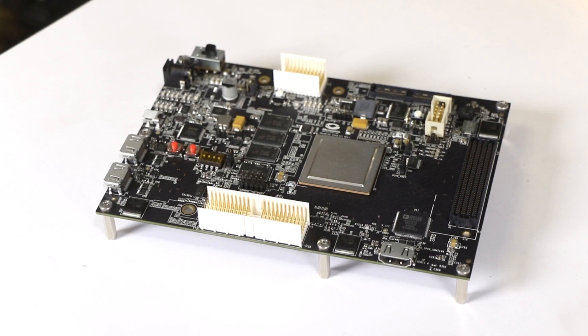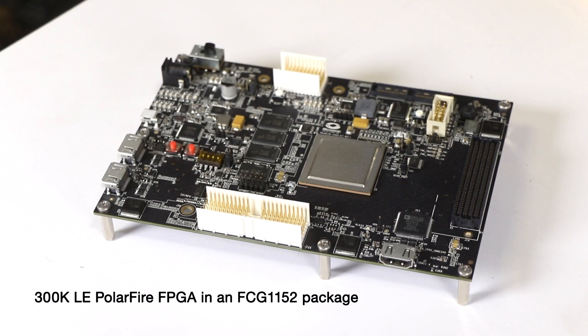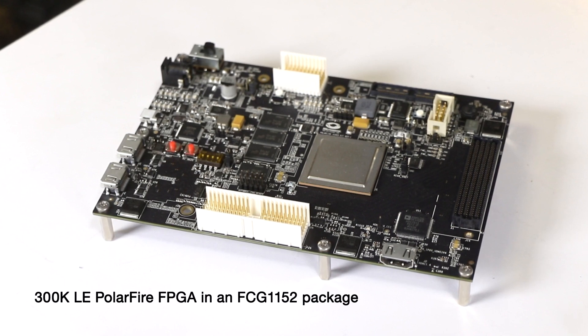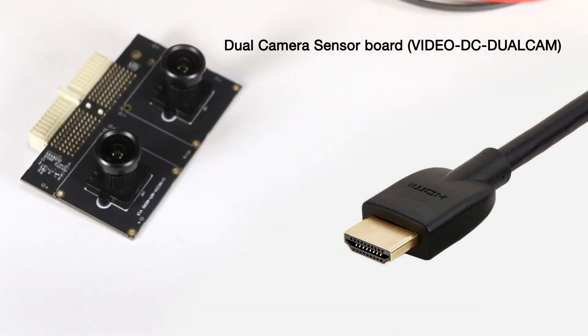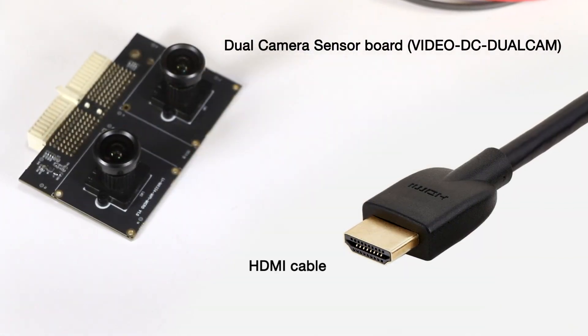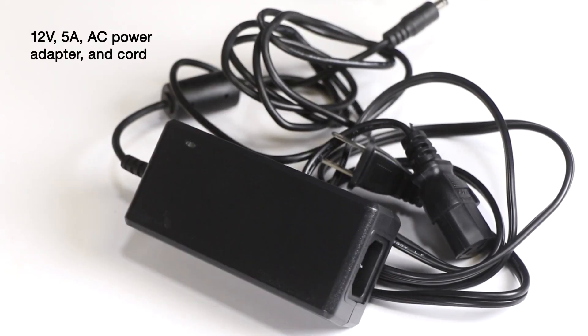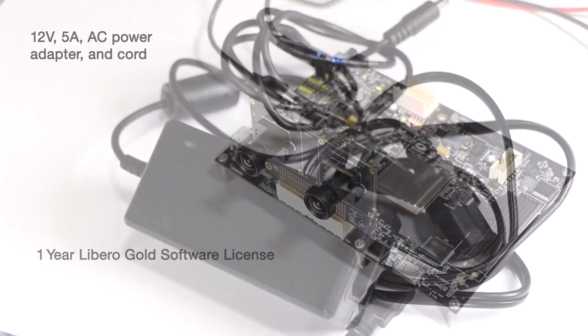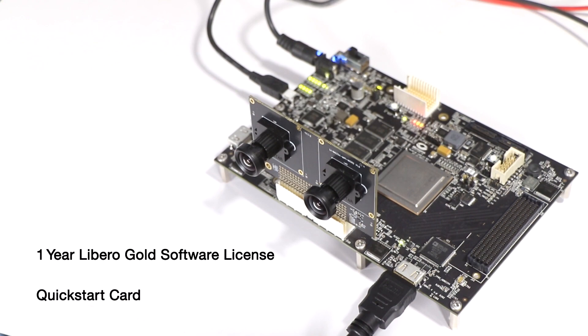Let's look at the kit contents of the MPF 300 video kit. It comes with a 300K LE PolarFire FPGA in an FCG-1152 package. There is a dual camera sensor board, HDMI cable, USB 2.0 A to Mini B cable, 12V 5A AC power adapter and cord, 1-year Libero Gold software license and a Quick Start card.